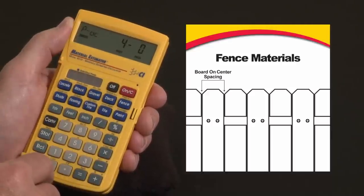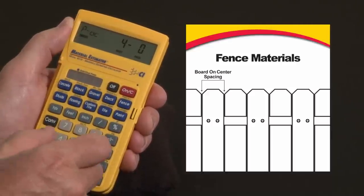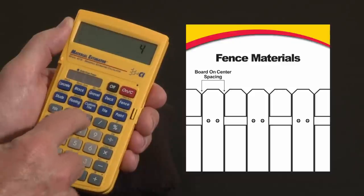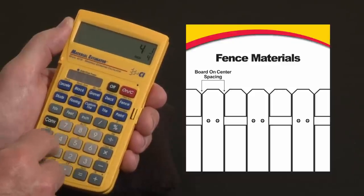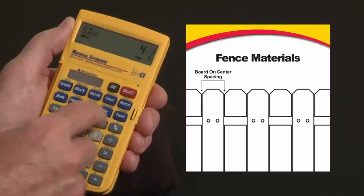I can change the board width to, say, four inch board plus a quarter inch gap, so four and a quarter. Four inch one quarter, store that as my board on center or board width.